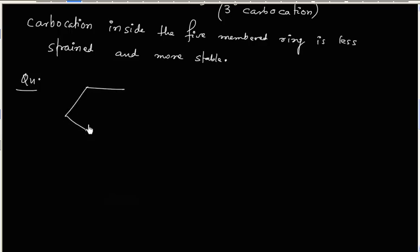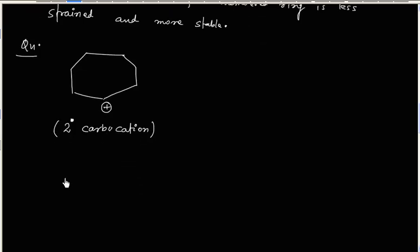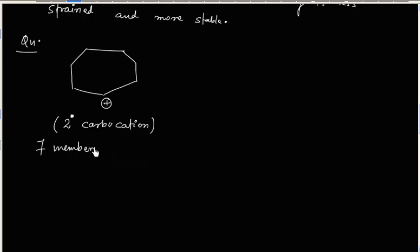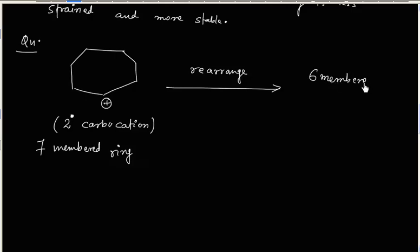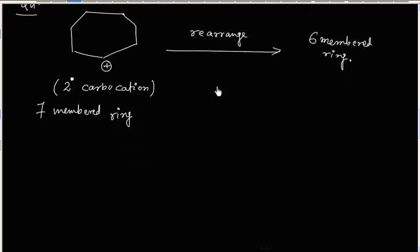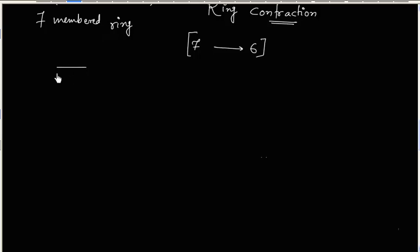Let us try this next problem. We have a secondary (2°) carbocation with a 7-membered ring. This carbocation rearranges to give a 6-membered ring — so in this case we will have ring contraction, going from a 7-membered ring to a 6-membered ring. Once again we can do an alkyl shift.